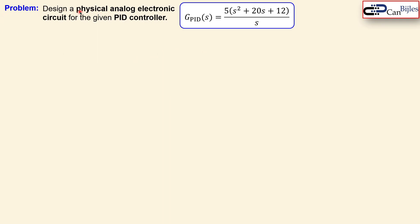The design problem is to design a physical analog electronic circuit for a PID controller transfer function. This PID controller has two zeros, visible from the numerator, and one pole at the origin — it is actually a product of a PI and PD controller. There are many solutions; this is just one of the many possible options.